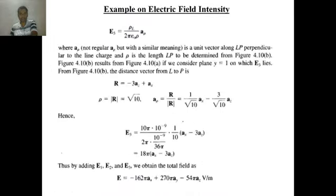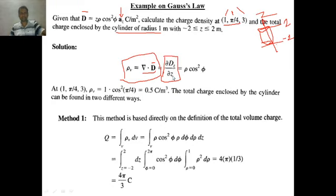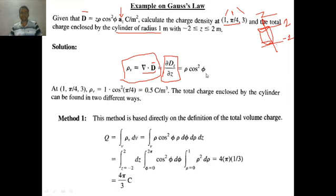Taking the derivative of D_Z equals Z·rho·cos²(phi) with respect to Z gives rho_V equals rho·cos²(phi) (where rho here is R). Now, putting in the coordinates of the given point — R equals 1, phi equals π/4, Z equals 3 — you get rho_V equals 1 times cos²(π/4) equals 1 times (1/√2)² equals 0.5 coulombs per meter squared. This is the answer to the first part.